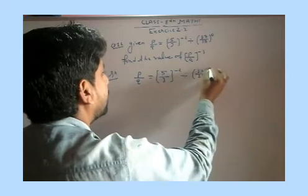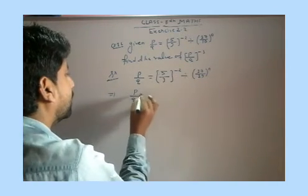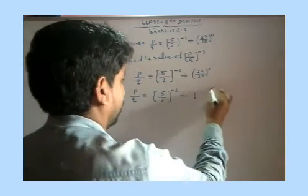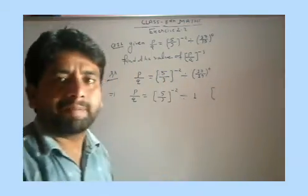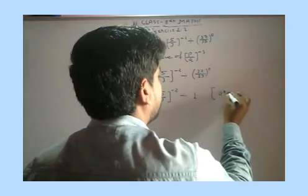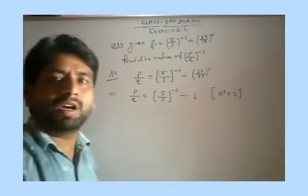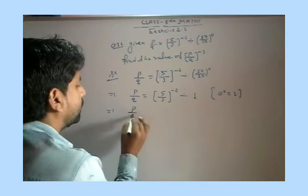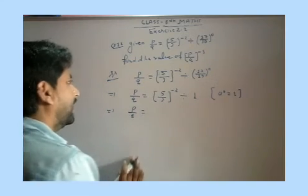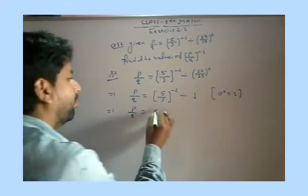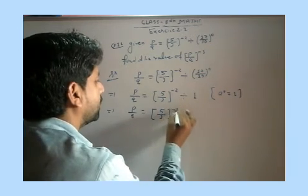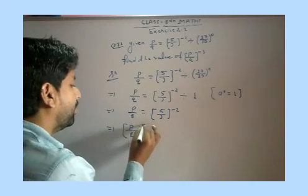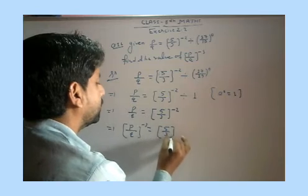Five upon three raised to the power minus two, and seventeen upon nineteen whole raised to the power zero. We know that any non-zero number raised to the power zero equals one. So let's say: a raised to the power zero equals one, where a is a non-zero integer. P upon Q equals three upon five. We have five upon P raised to the power minus two, then find nine: P upon Q raised to the power minus three.